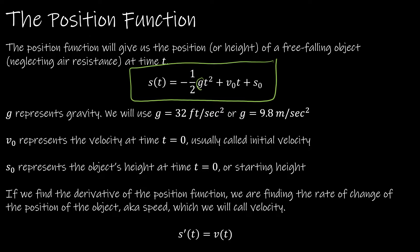G represents gravitational pull. We're going to use either 32 feet per second squared or 9.8 meters per second squared, depending on whether all the values are in feet or in meters. T represents time. V sub zero is the initial velocity — the velocity at time zero — and s sub zero is the initial position, or starting height: the object's height at time zero.